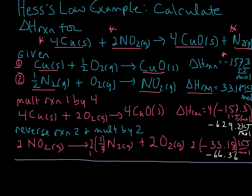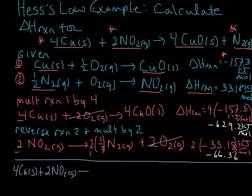Now let's add these two reactions together and look at what we can cancel out. We can cancel oxygen gas. When we add the two reactions together, we get 4 copper solid and 2 nitrogen dioxide as reactants, and 4 copper(II) oxide plus 1 nitrogen gas as products. Checking against our target reaction — this matches.